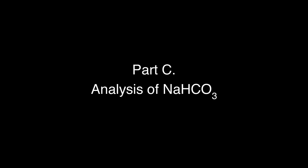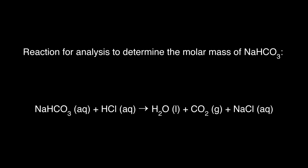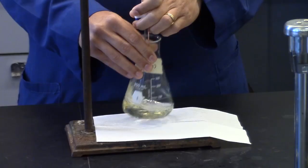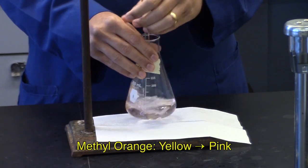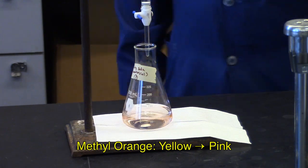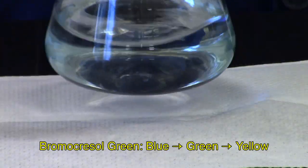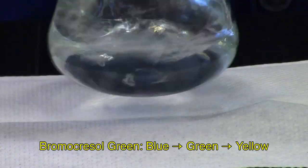Part C. Analysis of sodium hydrogen carbonate. Reaction for analysis to determine the molar mass of sodium hydrogen carbonate: Sodium hydrogen carbonate plus hydrochloric acid goes to water plus carbon dioxide plus sodium chloride. Equivalence point occurs at around pH equal to 5. So either methyl orange or bromocresol green will be used as an indicator for the titration.